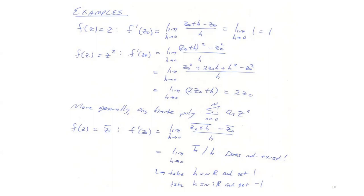Whenever you have an infinite polynomial (power series), you must be careful — you can't immediately conclude differentiability, but in many cases it will be differentiable with the term-by-term derivative. Now let's see an example of a function that is not differentiable: f(z) = z̄. We just need two paths with different limits. Looking at [conj(z₀+h) − conj(z₀)]/h = h̄/h. If h goes to 0 along real values, h̄/h = 1; if h = i·(real), then h̄/h = −1. The limit does not exist, so z̄ is not differentiable.